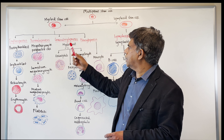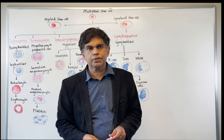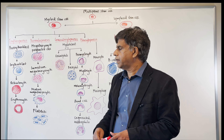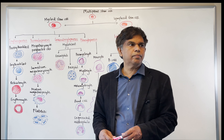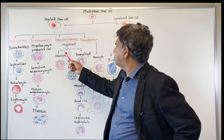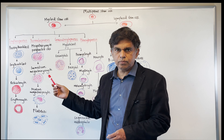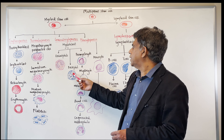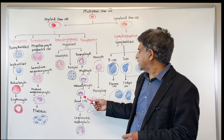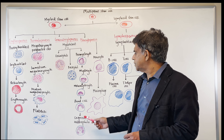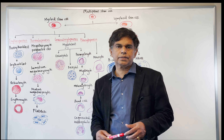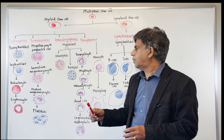Now let's look at granulocytopoiesis, where granular cells are made — eosinophils, basophils, and neutrophils. In granulocytopoiesis, you have the myeloblast turning into eosinophils and basophils. Then from the promyelocyte, you get myelocyte, metamyelocyte, band cell, and segmented neutrophils. You'll see band cells in infection — that's the left shift. All of this is good to know.